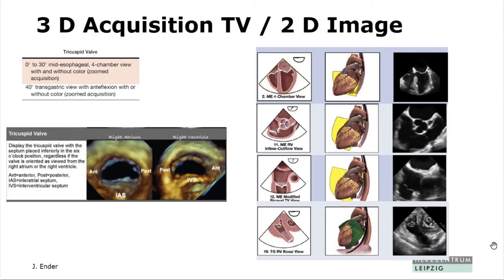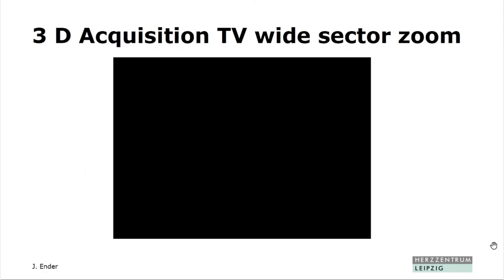What I realized when we started is that I have no clue which leaflet I see with 2D on the tricuspid. Everyone knows about the mitral — anterior and posterior leaflet — but with the tricuspid, I don't know. You all know the four images how you can display it with 2D. From the guidelines, the intra-atrial septum should be at the 6 o'clock position, giving you the septal, anterior, and posterior leaflet. The more patients with tricuspid valve you visualize, the more you will see that the tricuspid valve is not truly tricuspid in a lot of patients.